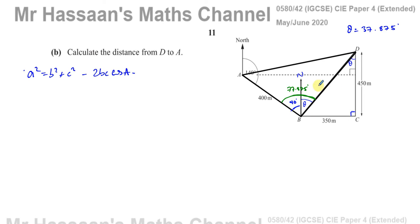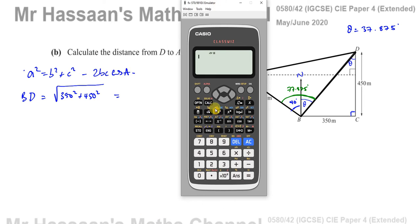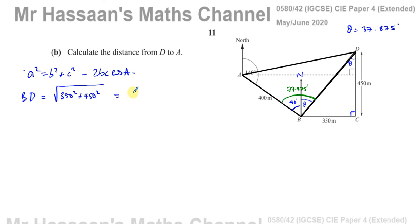The side we need to find first is BD. Using Pythagoras on the right-angle triangle BCD, BD equals the square root of 350 squared plus 450 squared, which simplifies to 50 times the square root of 130. So we now have BD and AB as the two sides, with the included angle of 77.875 degrees.